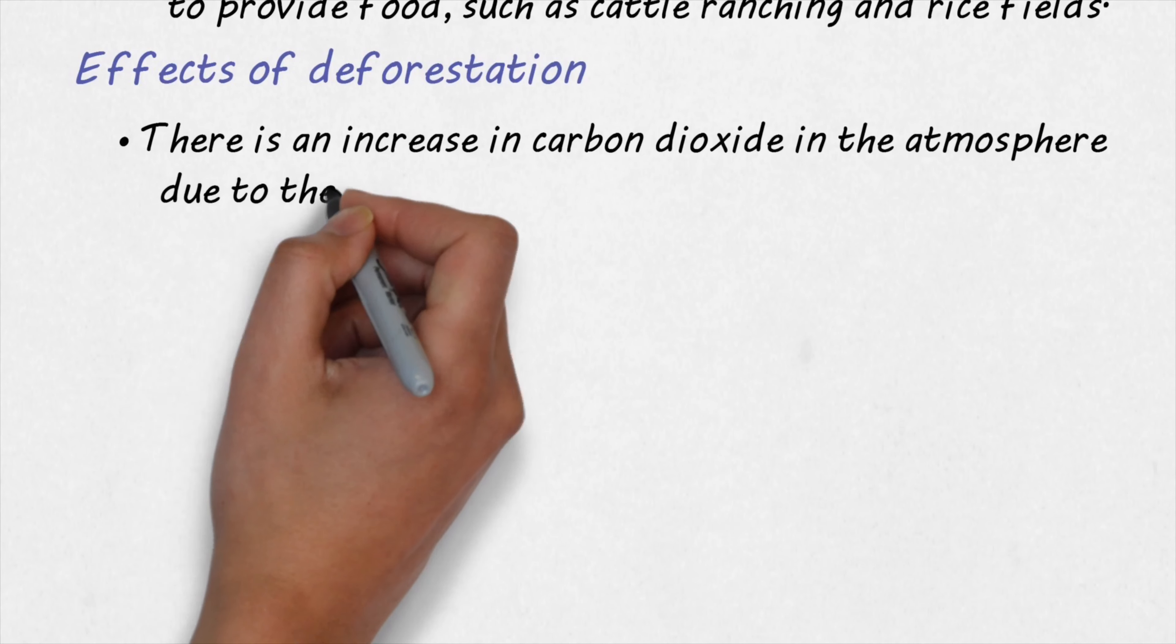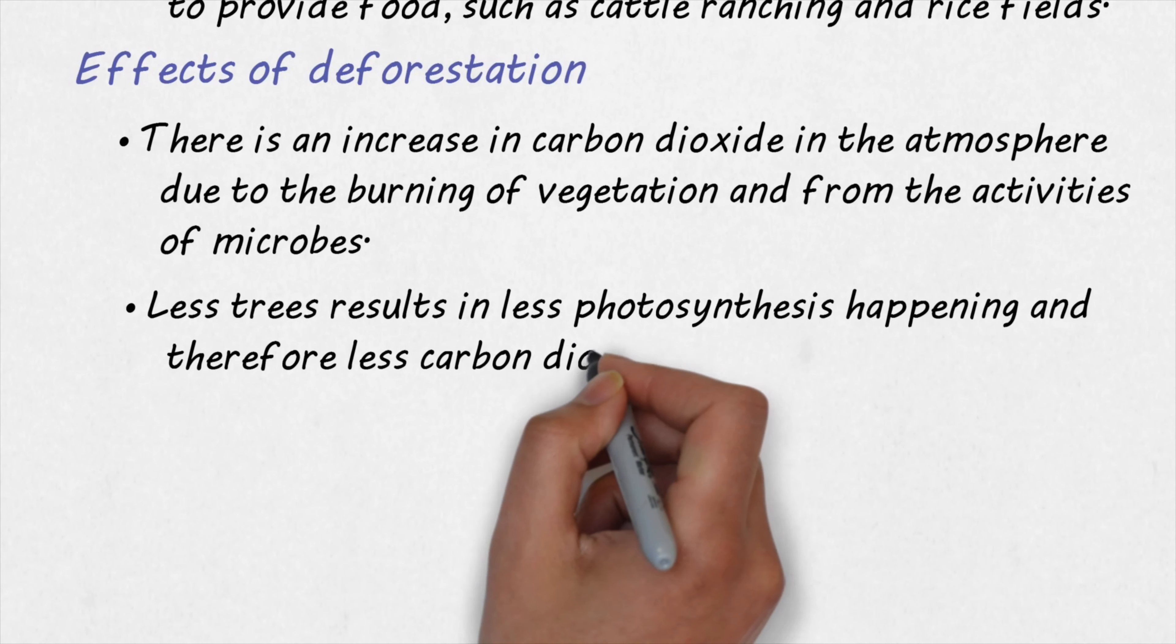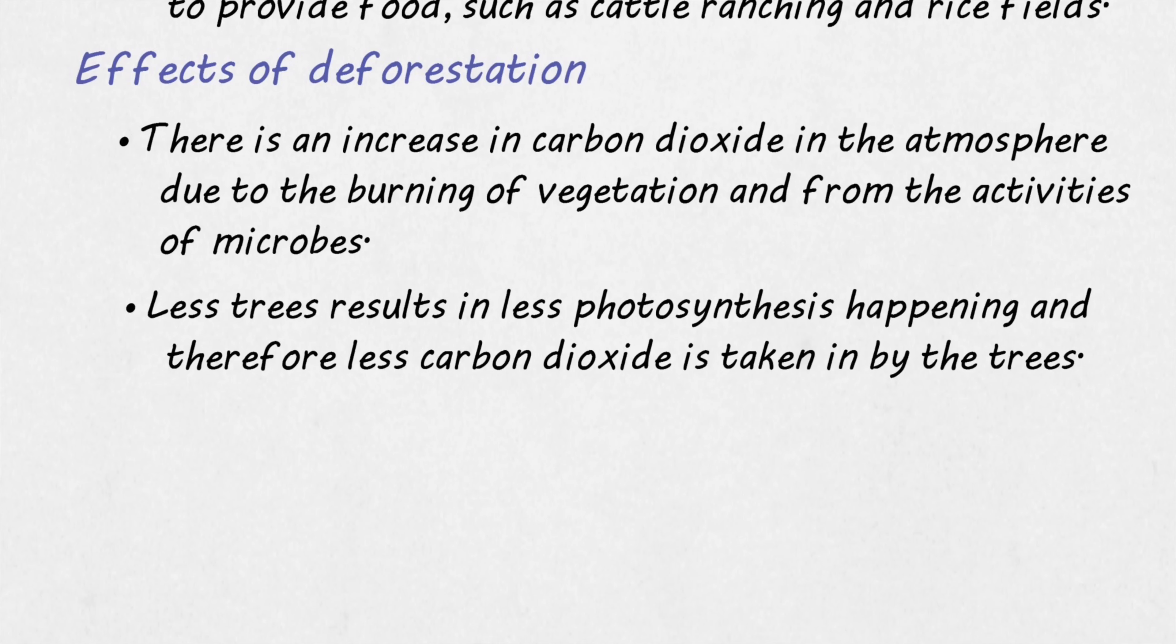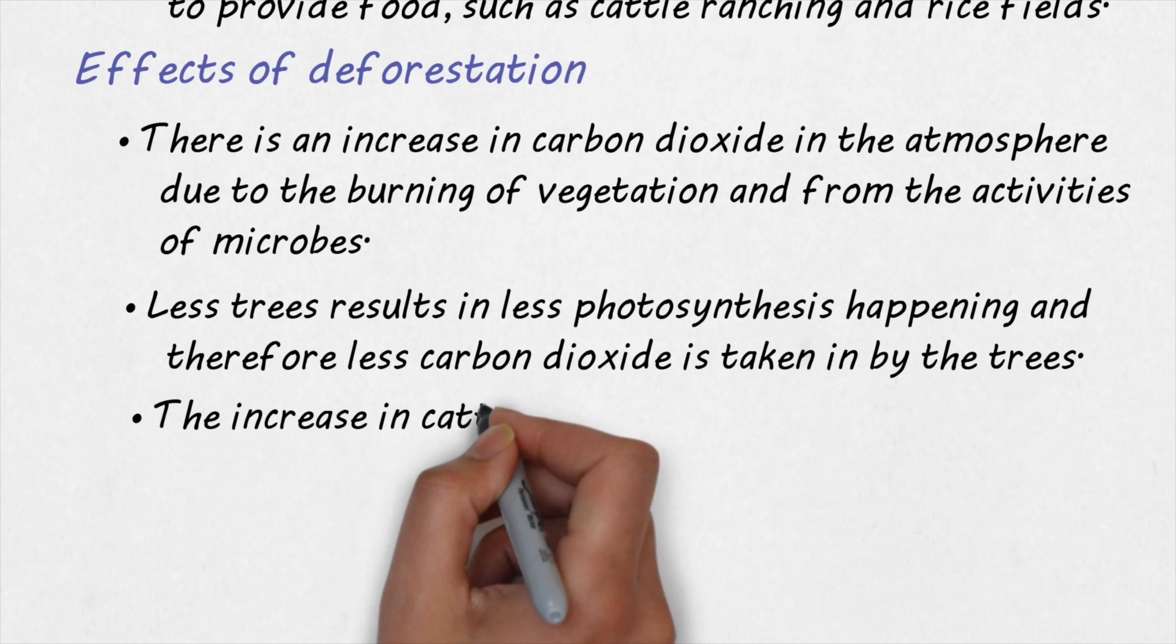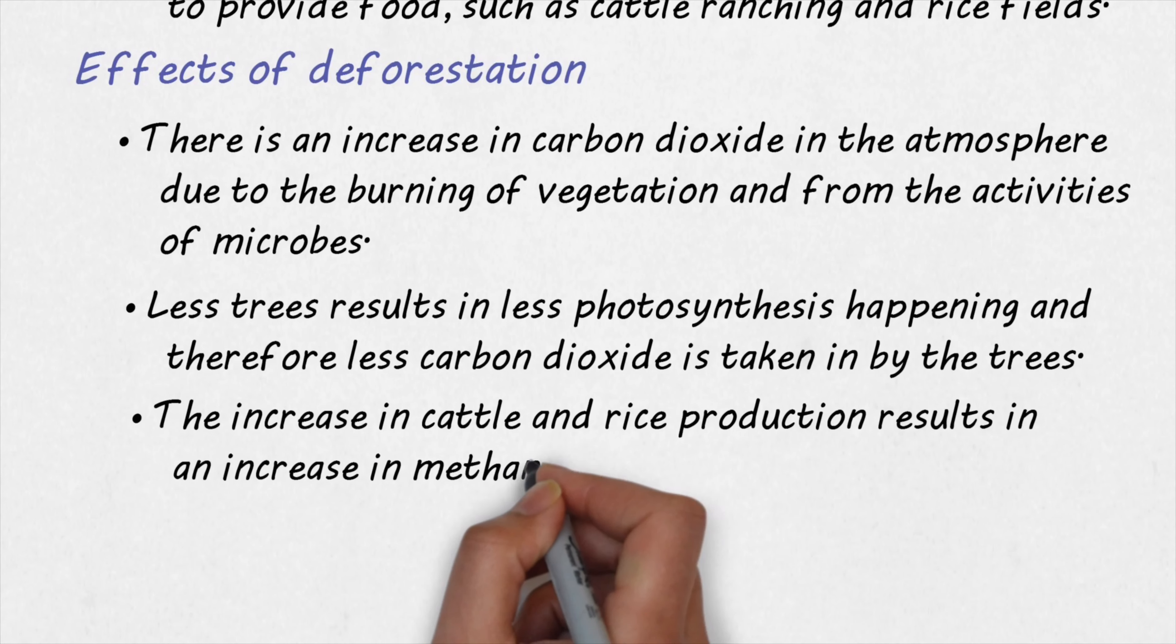Another reason why the carbon dioxide would be higher in the atmosphere is because the trees aren't taking the carbon dioxide out as much as they would have before. And this is because there are less trees. So less trees results in less photosynthesis happening. And therefore, less carbon dioxide is being taken in by the trees. The increase in cattle and rice production also resulted in an increase in methane in the atmosphere.